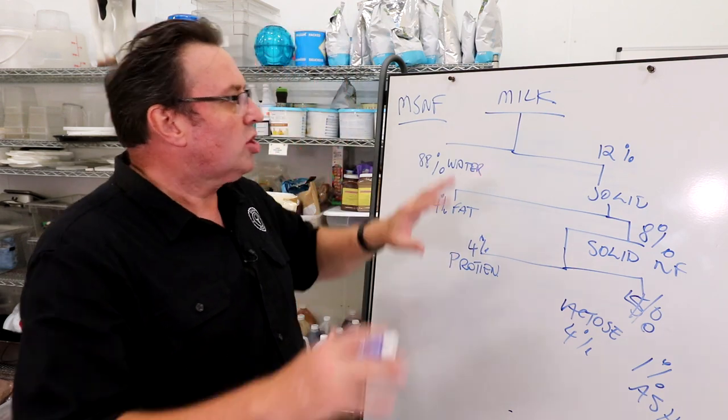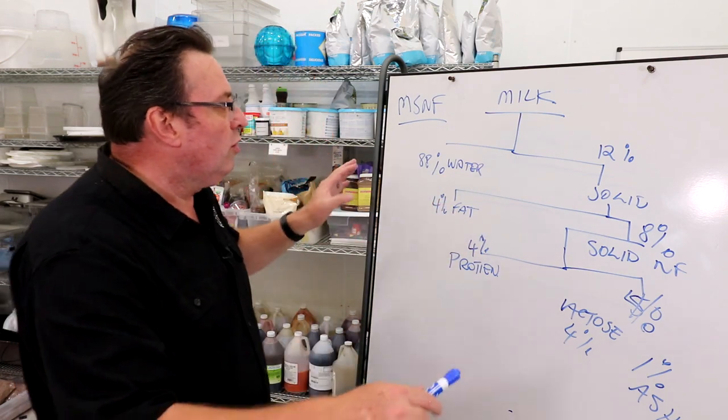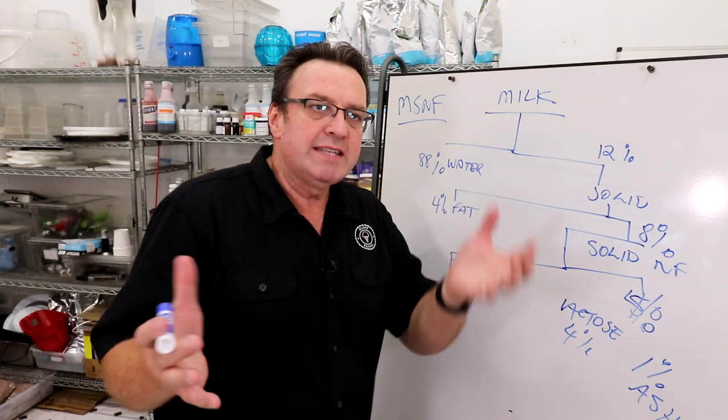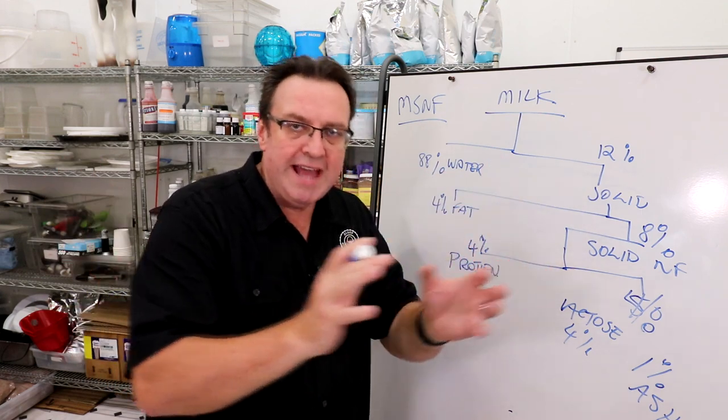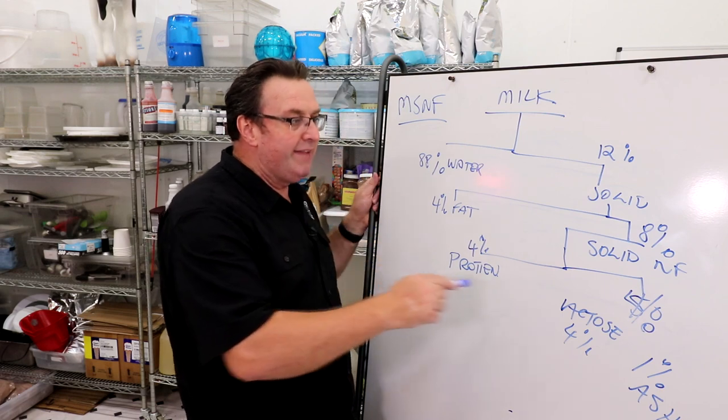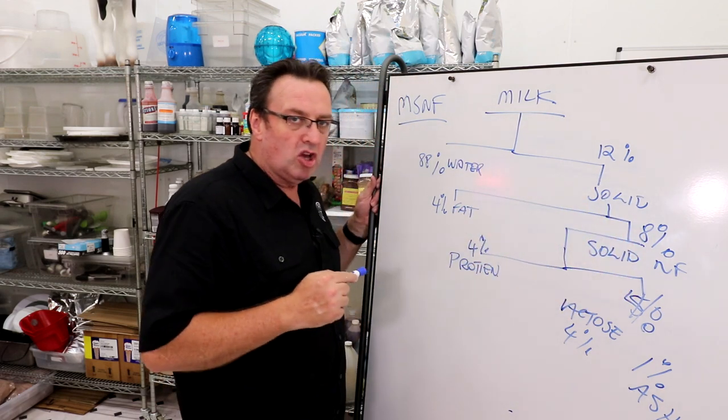Again, just a quick overview: 88 water, 12 solids, which is a balance between your milk fat and your milk solids non-fat. About four percent fat in milk leaves about eight percent in milk solids non-fat.